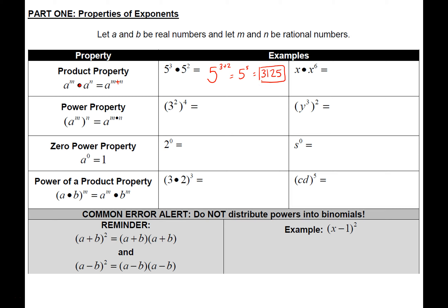The process works quite similarly if we have variables for our bases instead of integers. Looking at x times x to the sixth power, that first x has an exponent of one. Because the bases are the same and this is a multiplication problem, we write the base and then add the powers: one plus six, which means x to the seventh power is simplest form.